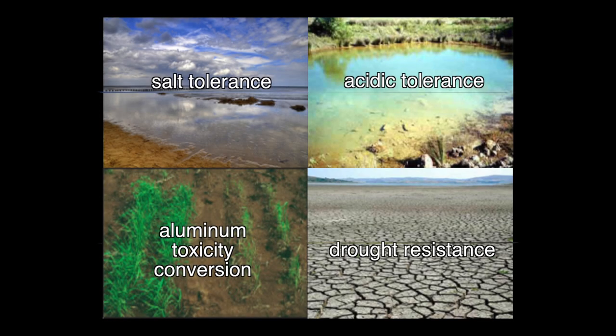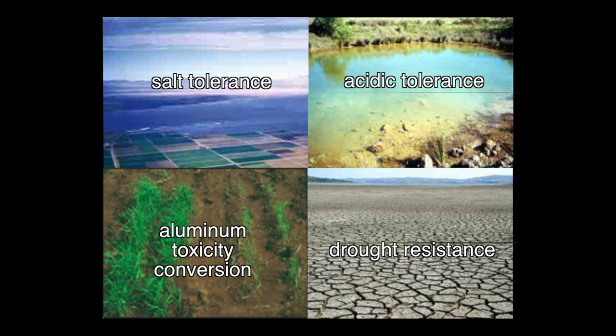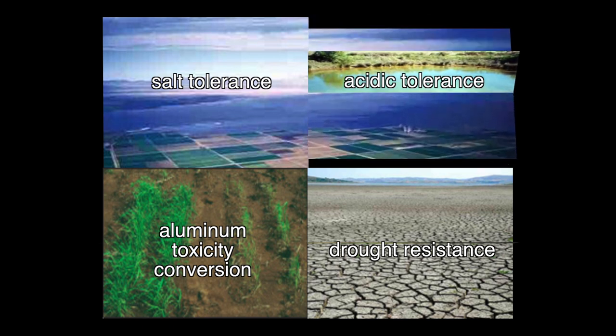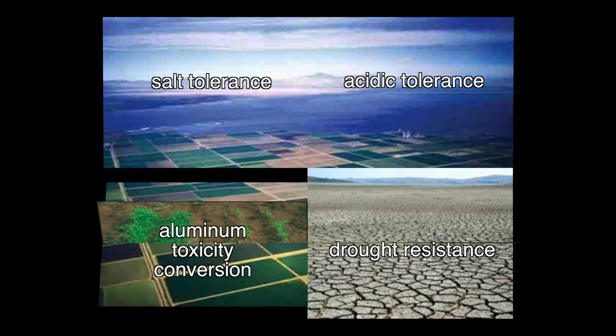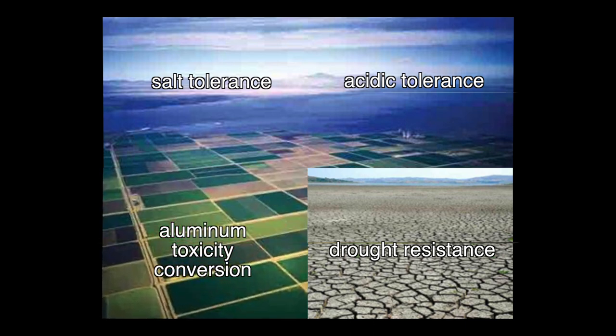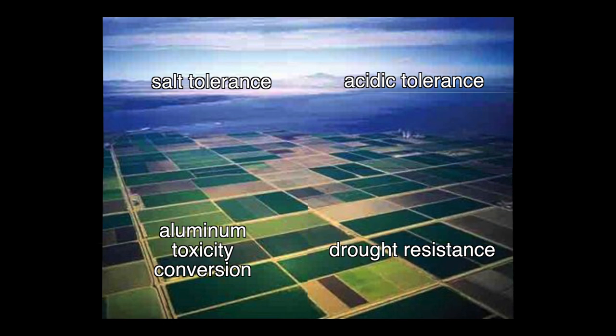Potential results include increasing yields of wheat plants by engineering them to be more tolerant of salt, growing crops on otherwise ideal agricultural land that is currently too acidic, developing crops that convert aluminum ions into non-toxic form, and making crops drought-resistant through discoveries about plant transport proteins that regulate water loss through pores on the surface of leaves.